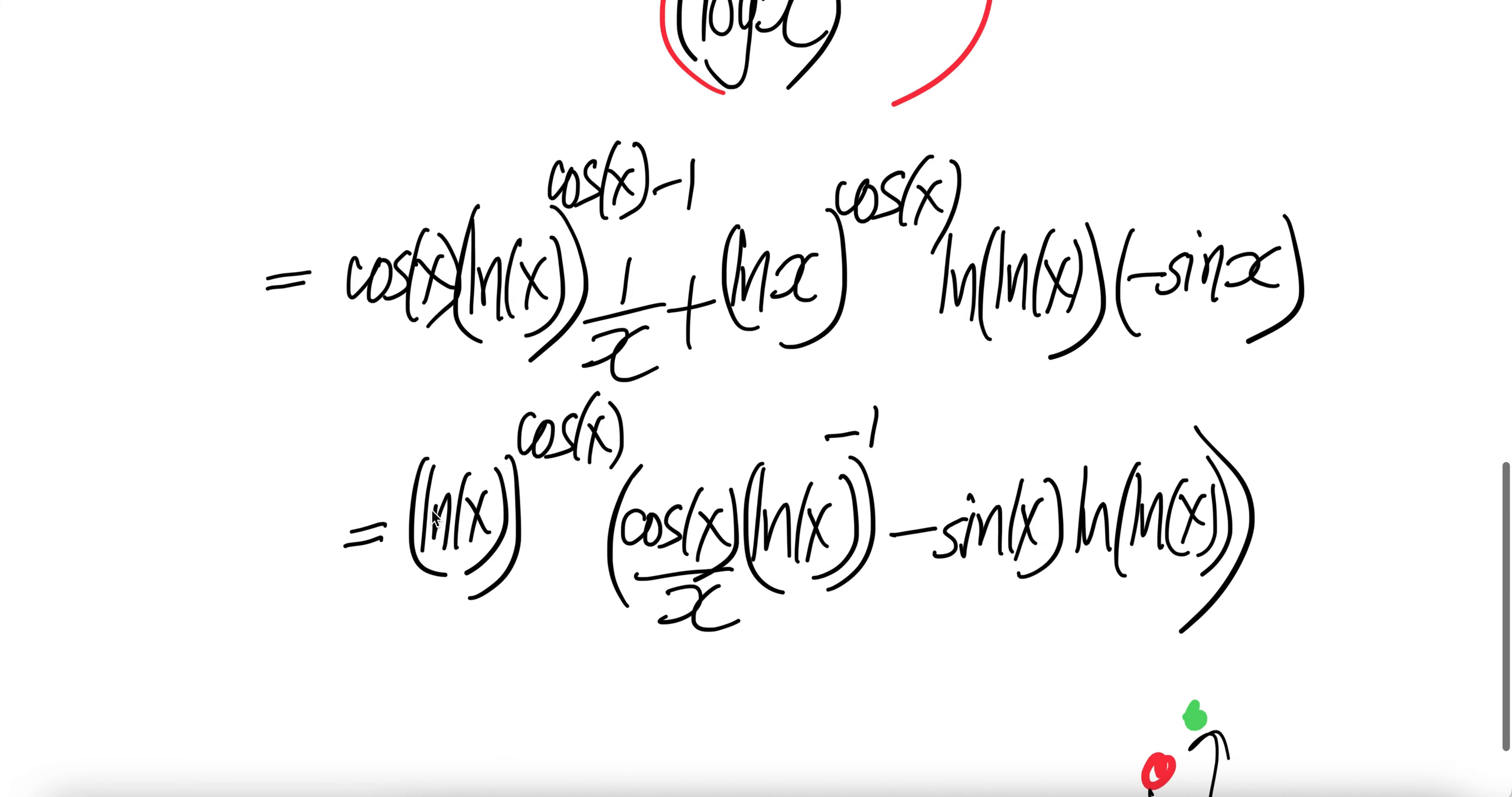Peel off ln X to the power cos X. You take this common factor out, you get cos X divided by X, and then you have ln X power negative one for this one. And then for this term, you have negative sine X ln ln X.